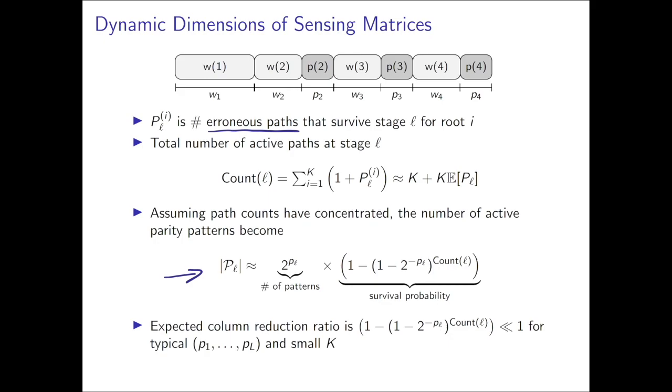And this is the expression that we see close to the bottom of the slide. Then this gives us the number of columns we must retain in A. Correspondingly, we also have the number of columns that can be pruned. So the expected column reduction ratio is given by this expression. For the parameters of interest, it is often much less than 1.